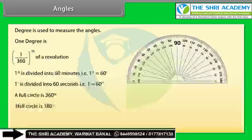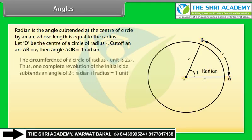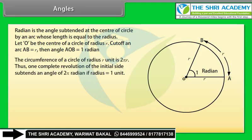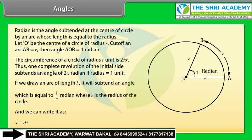Half circle is 180 degrees. A radian is the angle subtended at the center of a circle by an arc whose length is equal to the radius. Let O be the center of a circle of radius R. Cut off an arc AB equal to R; then angle AOB equals 1 radian. The circumference of a circle of radius R is 2πR. One complete revolution sustains an angle of 2π radians when radius equals 1 unit. If we draw an arc of length L, it subtends an angle L/R radians, where R is the radius. We write L = R·θ.